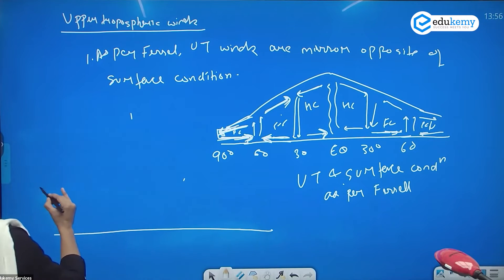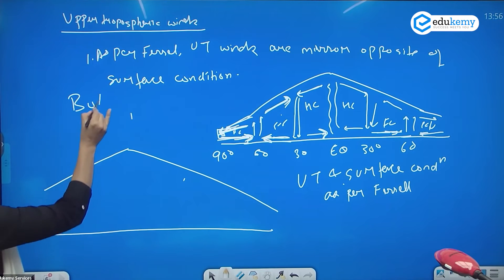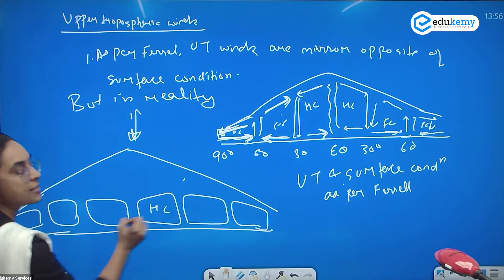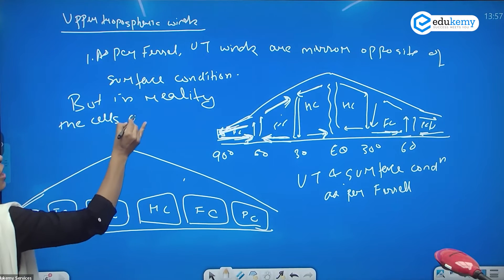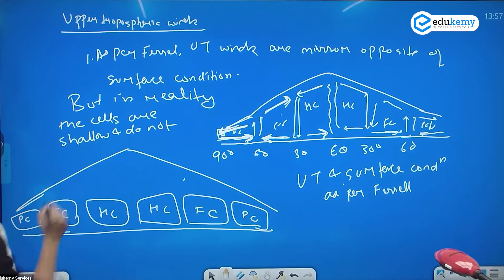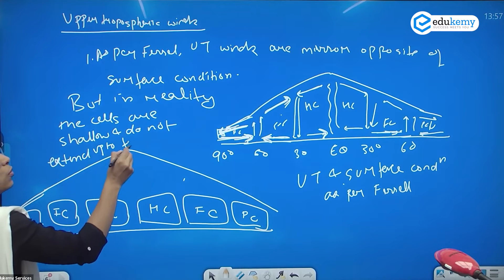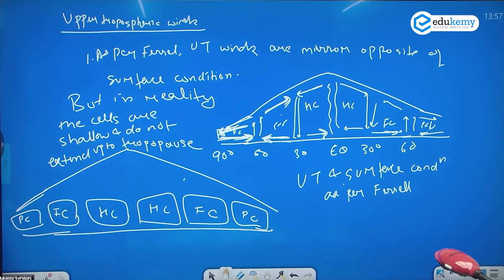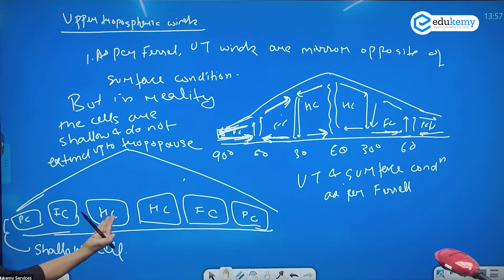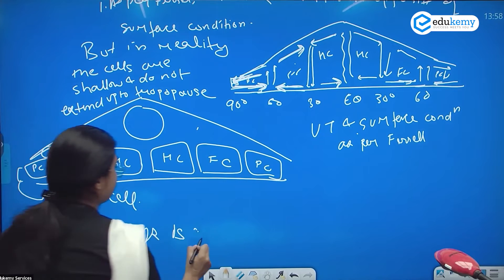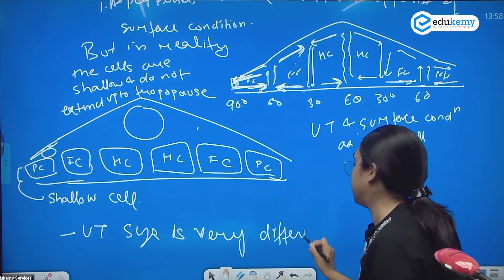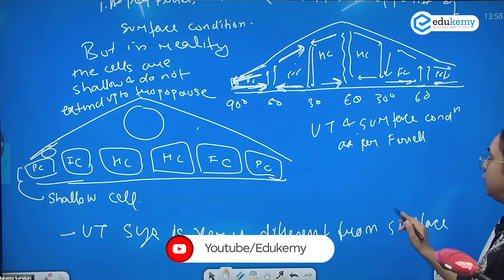But in reality, the cells are shallow and do not extend up to the tropopause. The upper tropospheric system is therefore very different from the system at the surface.